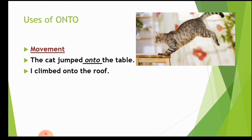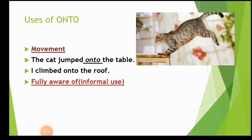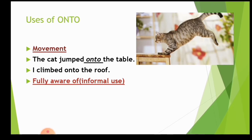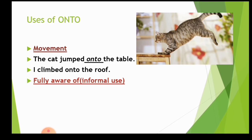Another example: 'I climbed onto the roof.' Here we use 'onto' because I moved to the surface of the roof. We are fully aware of the destination — the roof — so we use 'onto'.